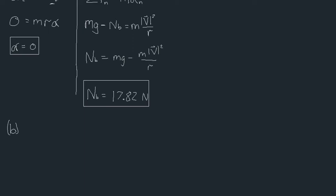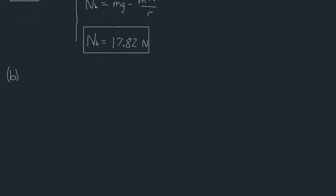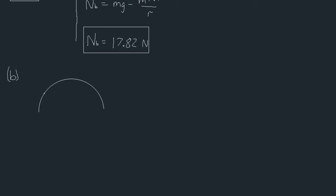Now let's do part B. First, a free body diagram. This is our object at point A, with the radius of the circle shown, and θ is the angle from the vertical. We still have gravity acting vertically downwards, magnitude mg, but our normal force Nₐ will now be acting perpendicular to the path — not vertically upwards — in this direction.